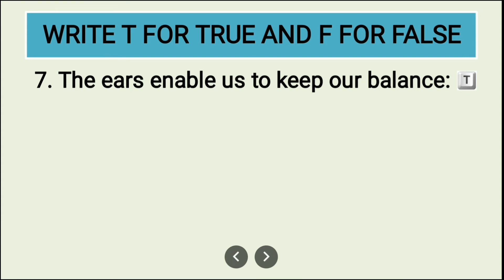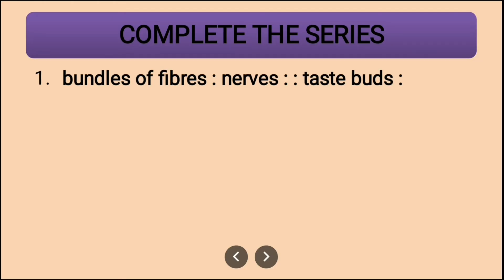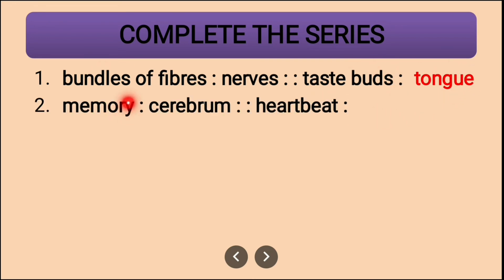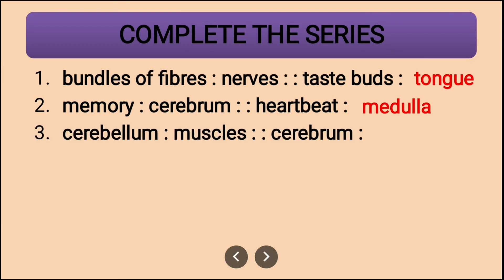Now, complete the series. Bundles of fibers are called nerves. Taste buds together make up the tongue. Memory is controlled by the cerebrum. Heartbeat is controlled by the medulla — medulla is the correct answer.